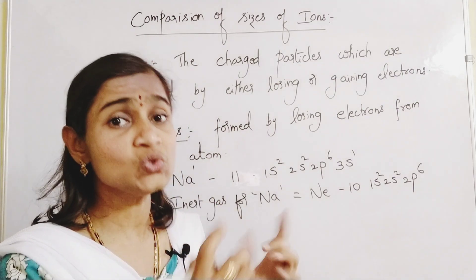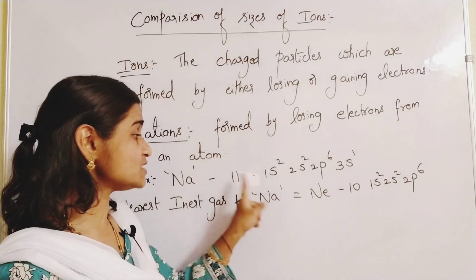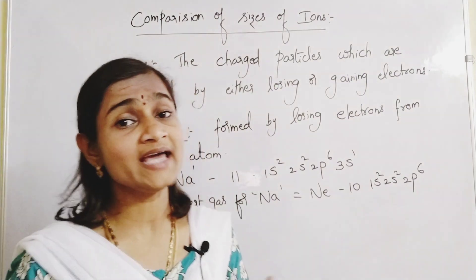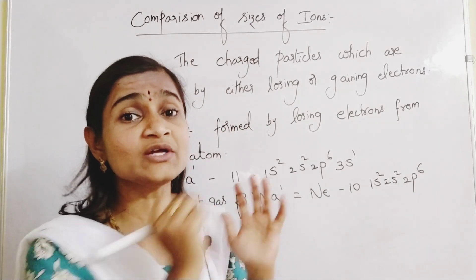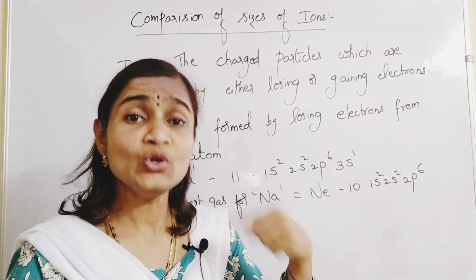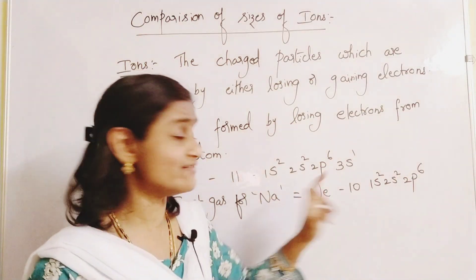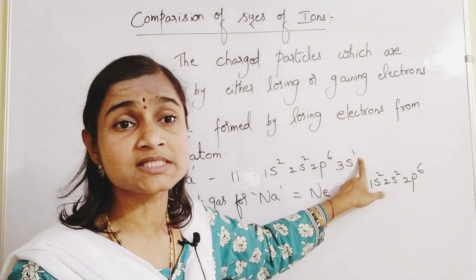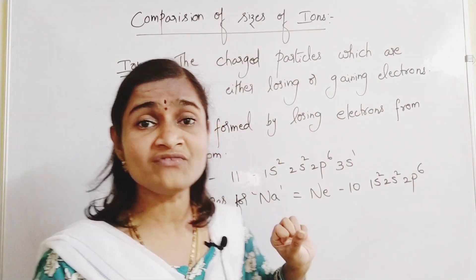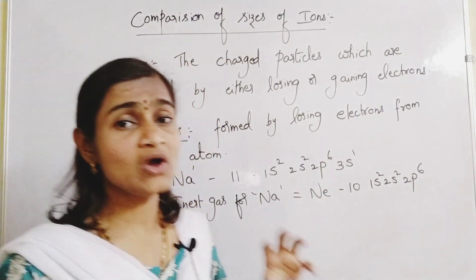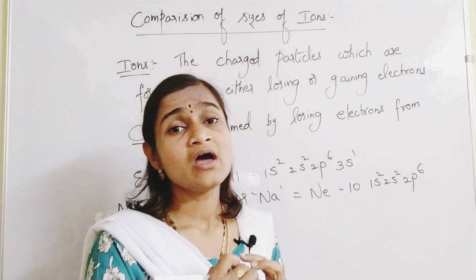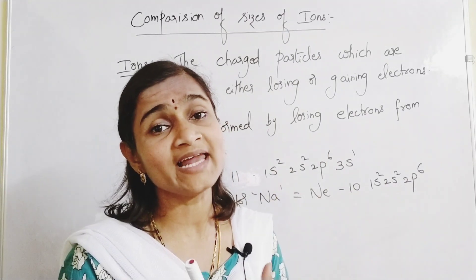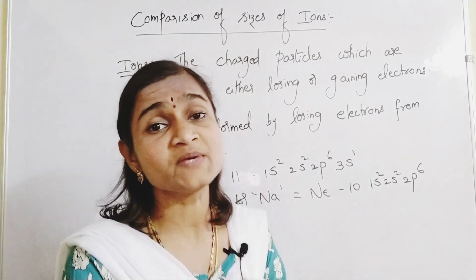To acquire the stability of neon, sodium has to lose one electron. Sodium has 11 electrons and neon has 10. By losing the electron from 3s¹, sodium acquires the octet configuration of neon. To attain octet configuration, elements either lose or gain electrons, and such species formed are called ions.